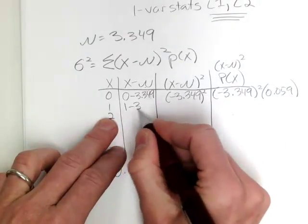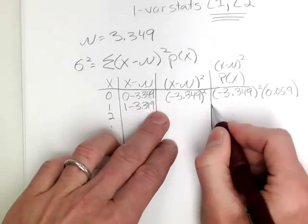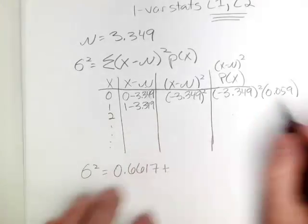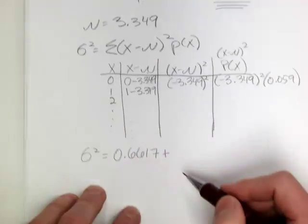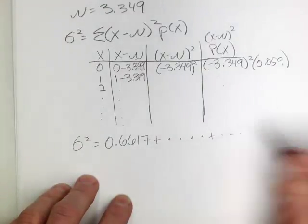I'd have to take 1 and subtract 3.349, and then square that deviation, and then take that value and multiply it by its corresponding probability. And I'd have to do it for all of the values up through 7. So it would be very cumbersome.